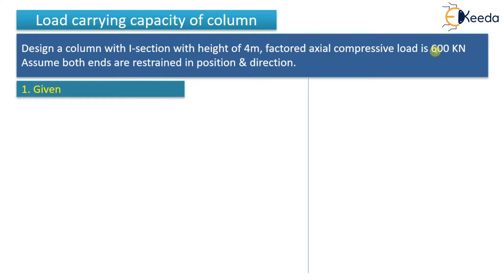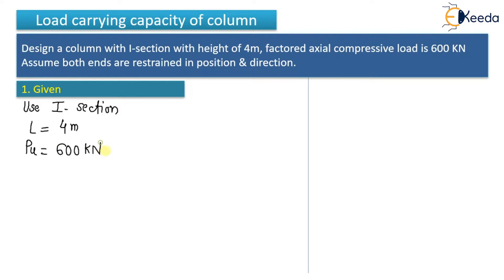Step one: given data. Use I-section. Span or height is 4 meters. Factored axial compressive load Pu is 600 kilonewton. Both ends are restrained in position and direction, meaning both ends are fixed. The diagram shows a column with both ends fixed.